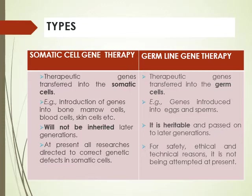On the basis of the type of cell, gene therapy is of two types: somatic cell gene therapy and germ line gene therapy. In somatic cell gene therapy, therapeutic genes are transferred into somatic cells — that means body cells other than the germ cells. In germ line gene therapy, the gene will be transferred into the germ cells. For example, in somatic cell gene therapy, genes are introduced into bone marrow, blood cells, and skin cells.